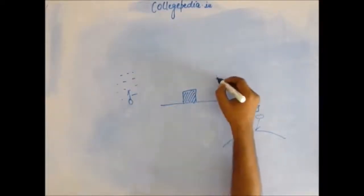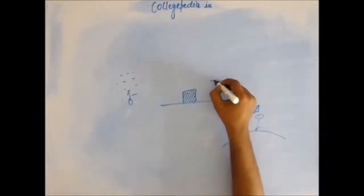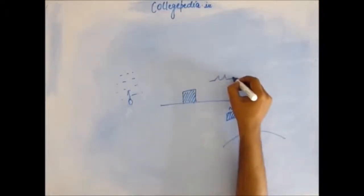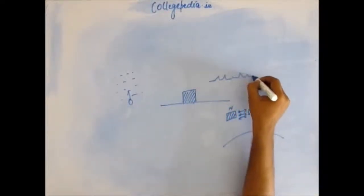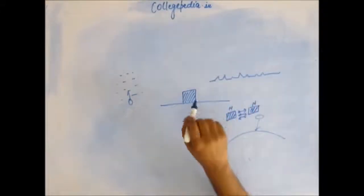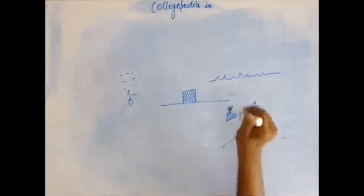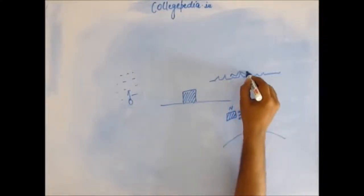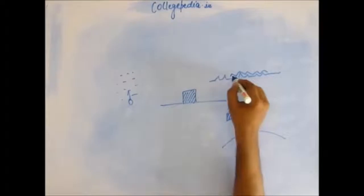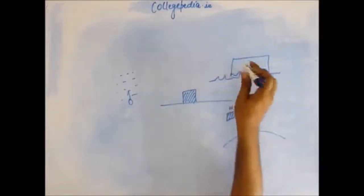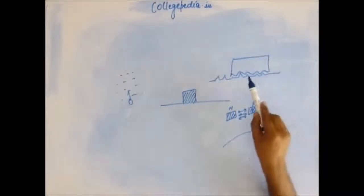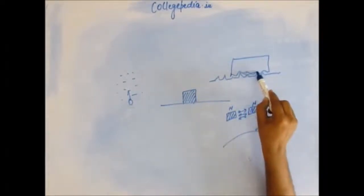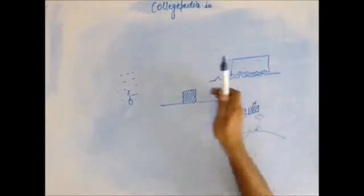Friction force acts because at the microscopic level, surfaces are not smooth — they have spikes. The object kept on the ground also has its own spikes, and these two sets of spikes get interlocked. So when you want to push the block, these interlocked spikes have to break. Only when the spikes at the microscopic level break will the block move ahead.